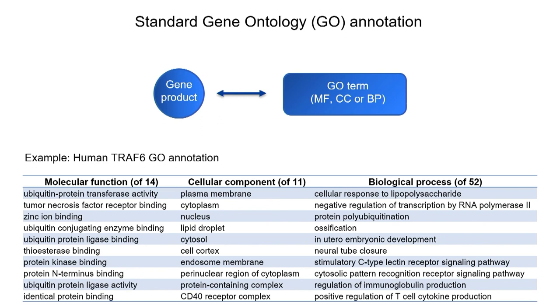For instance, I took the example of TRAF6, and as you can see, there are 14 different molecular activities associated to this protein. You have 11 cellular components, and you also have 52 biological processes associated to this protein.